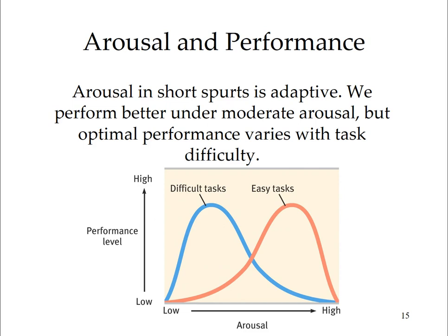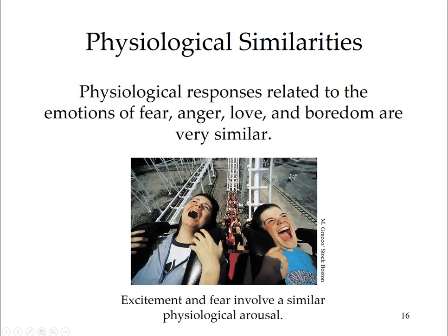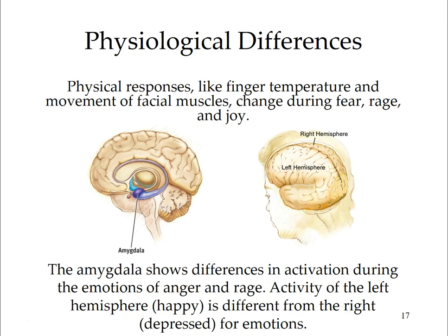Similar physiological arousal occurs during fear, anger, and sexual arousal. Nonetheless, these emotions feel different, and our facial expressions differ across these three states. Fear and rage are sometimes accompanied by differing finger temperatures and hormone secretions. During fear, brow muscles tense; during joy, muscles in the cheek and under the eye pull into a smile. Emotions differ much more in the brain circuits they use — brain scans show increased activity in the amygdala during fear.